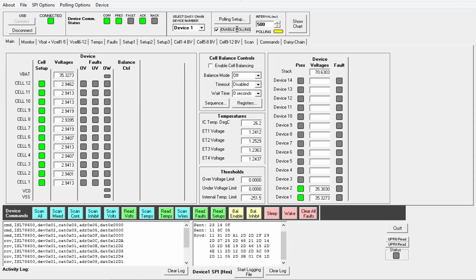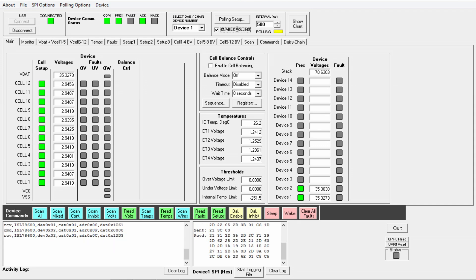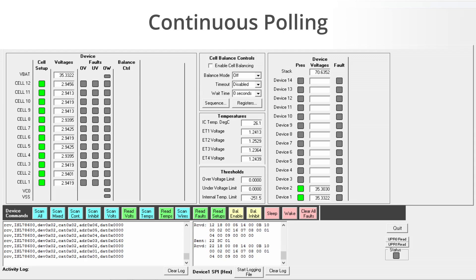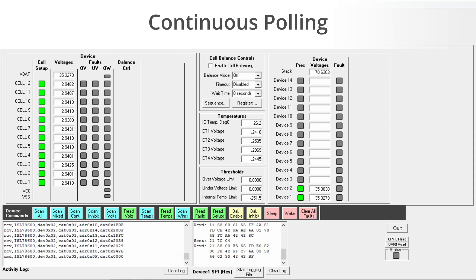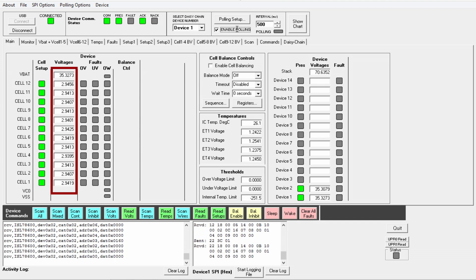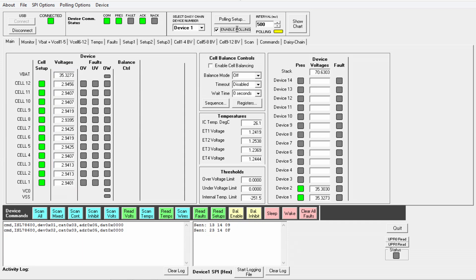I'd like to now show you some features of the part using the GUI for illustration. Continuous polling. The part has three voltage scanning modes. I will demonstrate the scan all mode using the continuous polling feature of the GUI. Here you can see each cell voltage being continuously read. The polling rate can be selected and adjusted by the user.